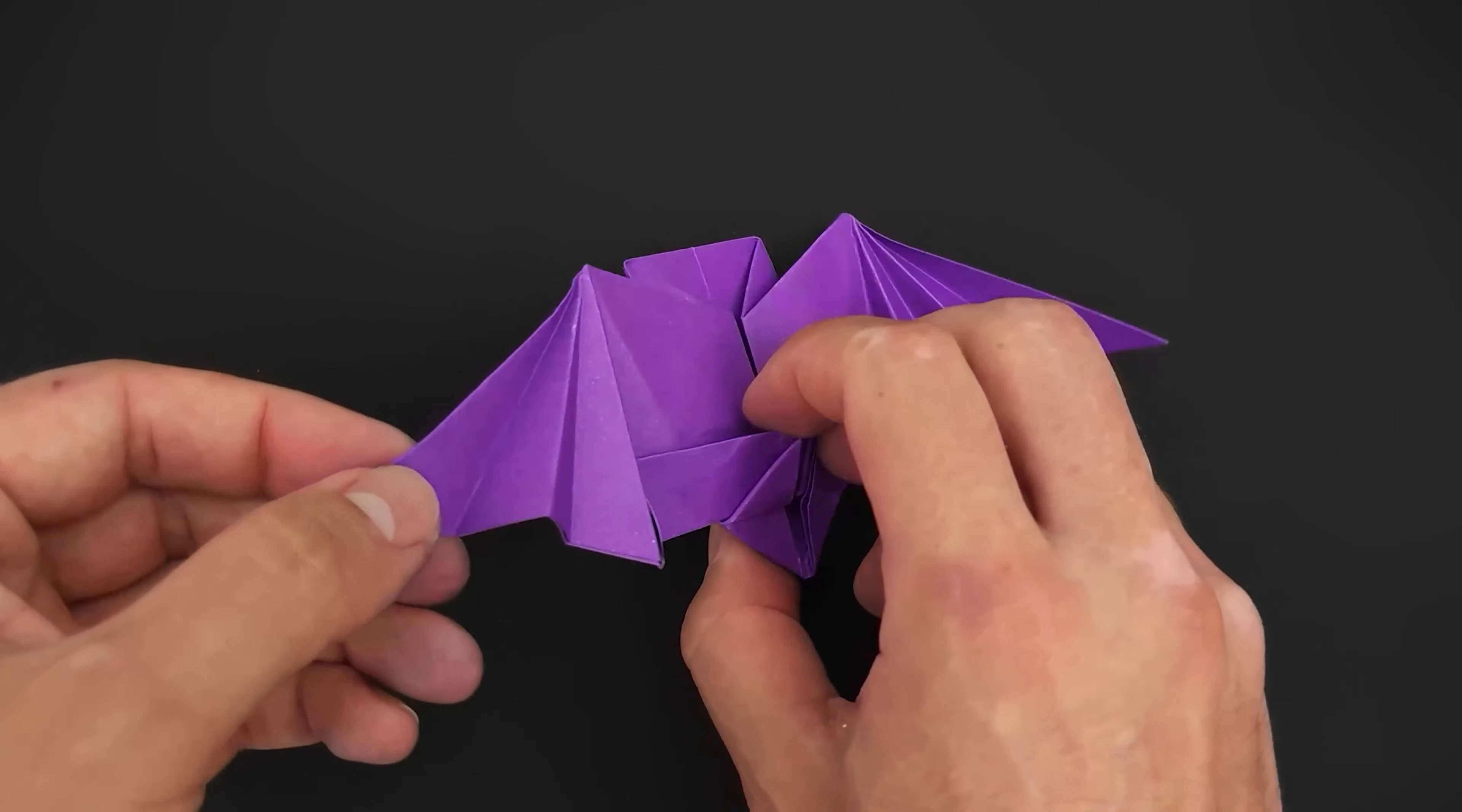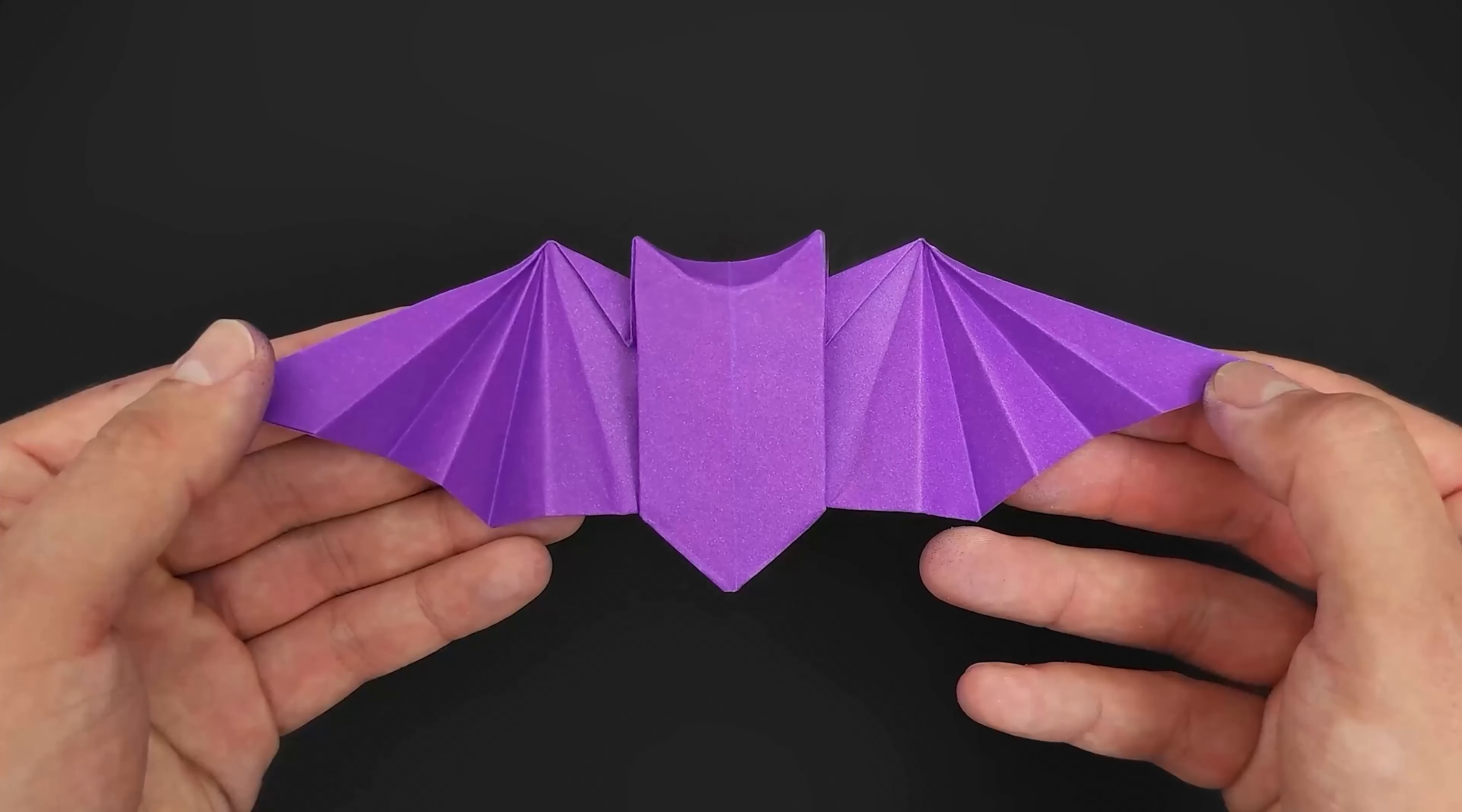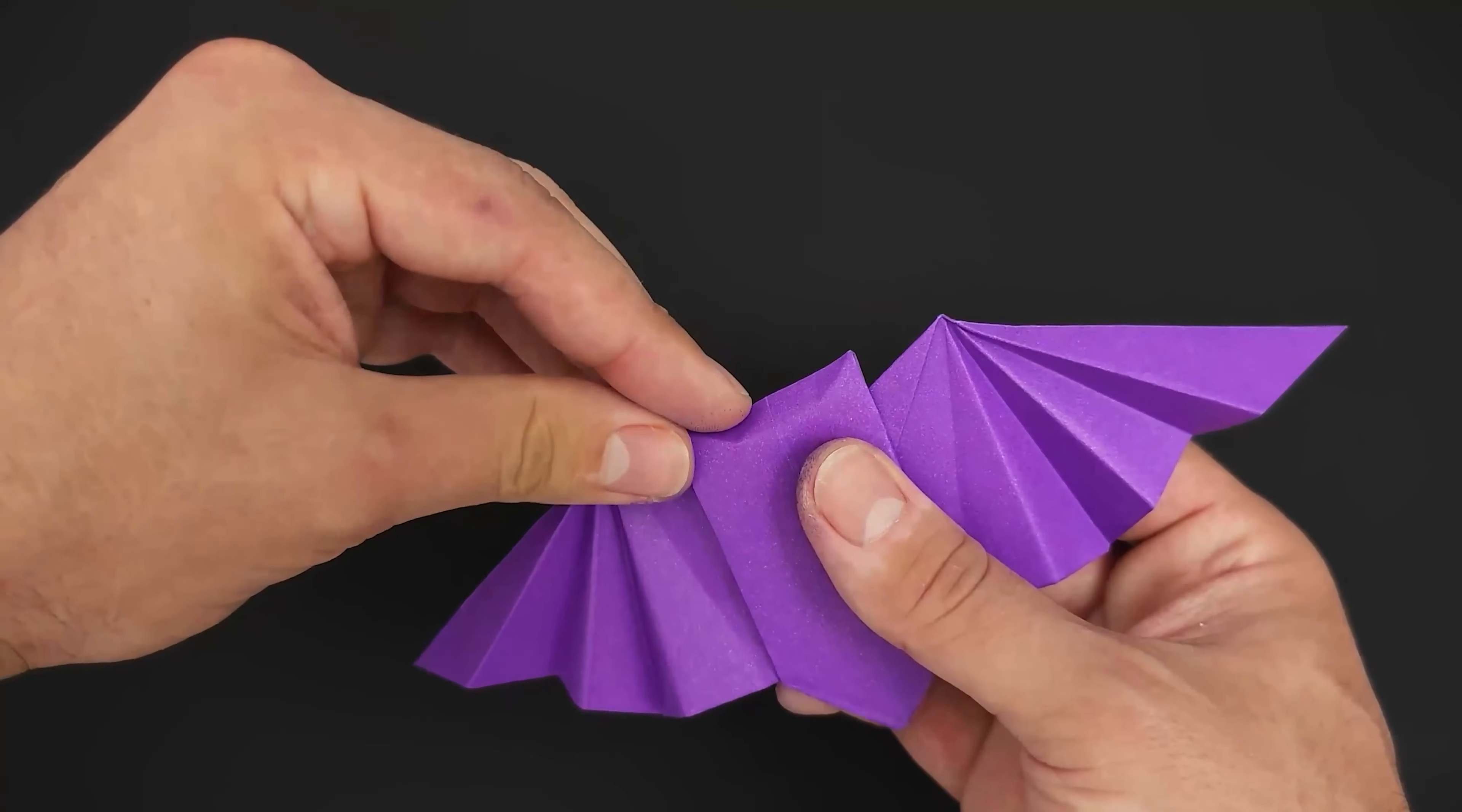Flip it over again, and the final detail is shaping the head. Just press the corners a little, leaving the center curved or forming another corner.